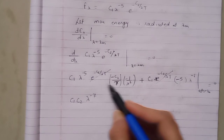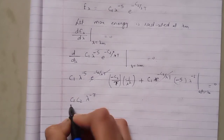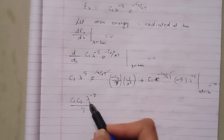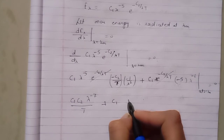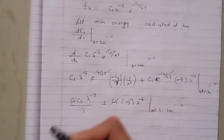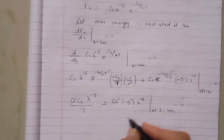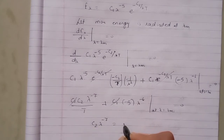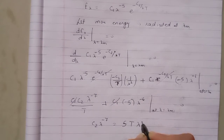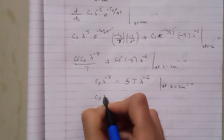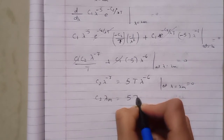The e raised to minus C2 upon lambda T cancels from both terms. We are left with C1 C2 upon T times lambda raised to minus 7 minus 5 C1 times lambda raised to minus 6, at lambda equals lambda_m equals 0. C1 also cancels from both terms, giving C2 upon T times lambda raised to minus 7 equals 5 times lambda raised to minus 6.